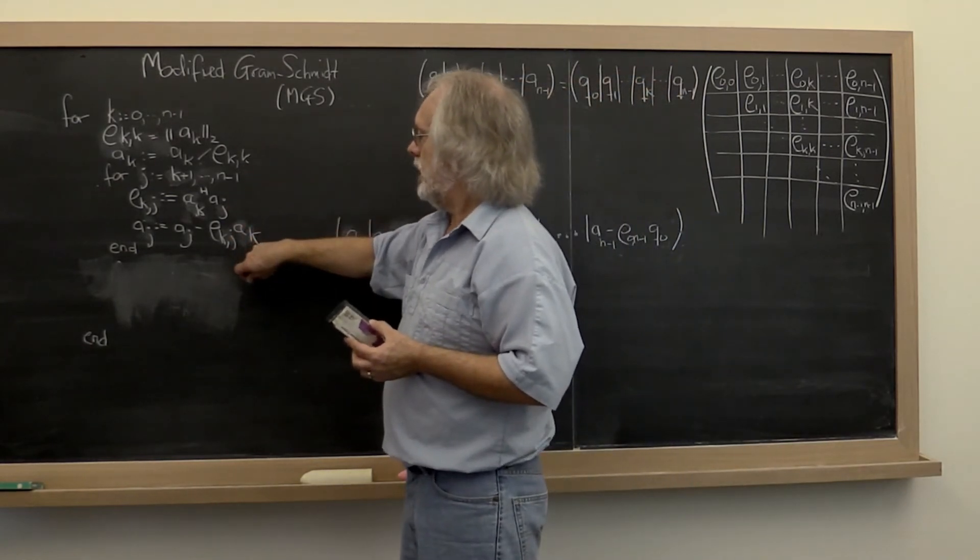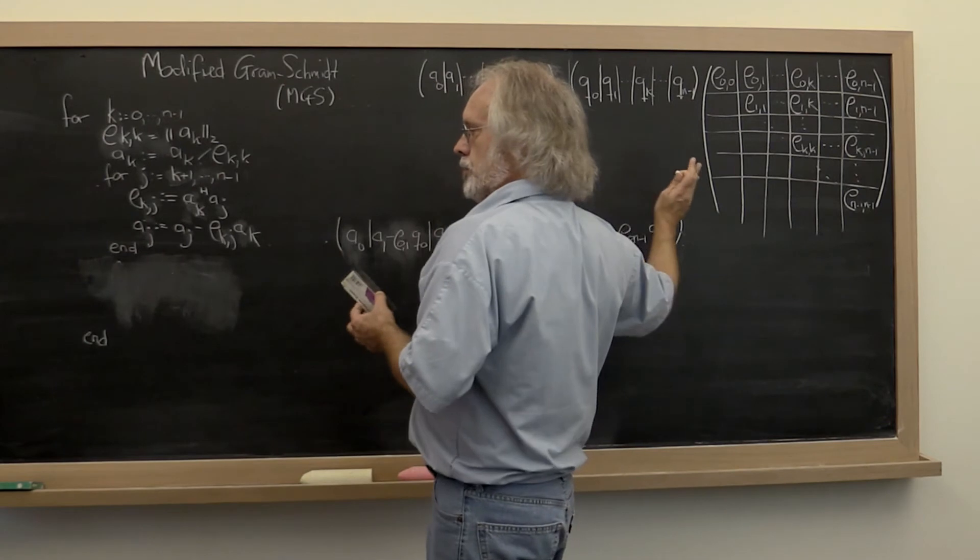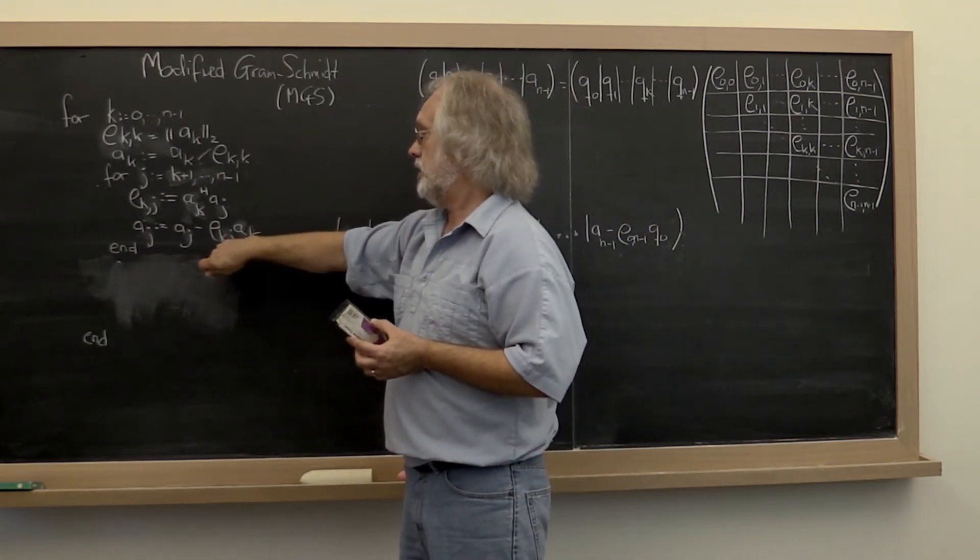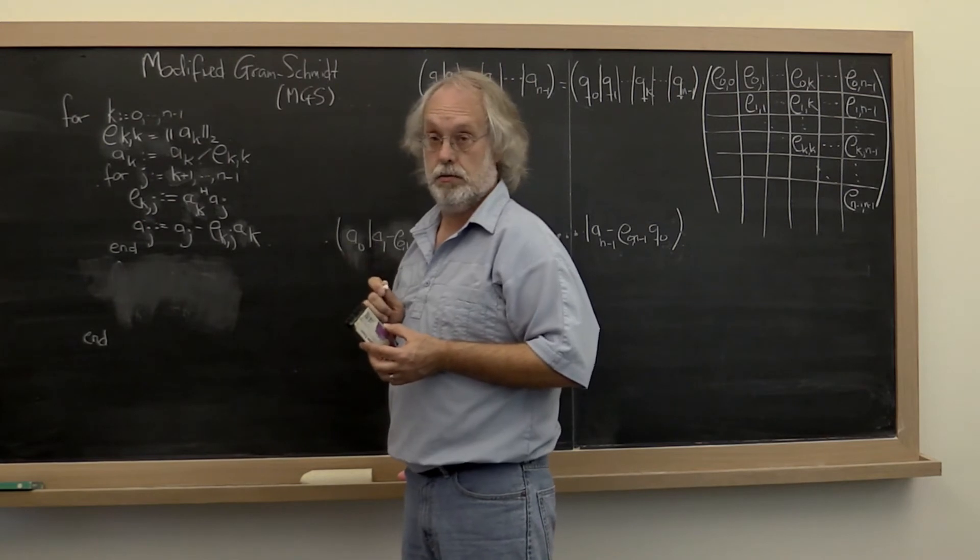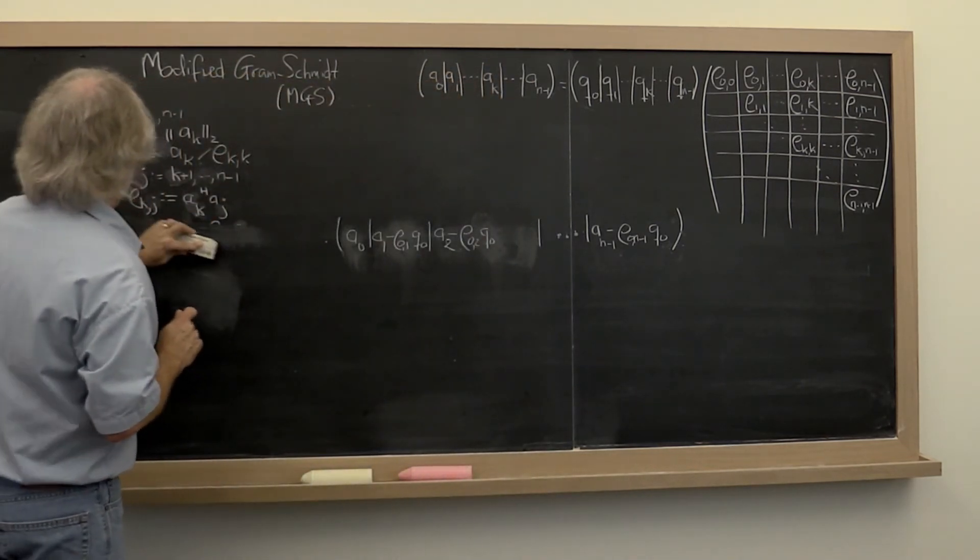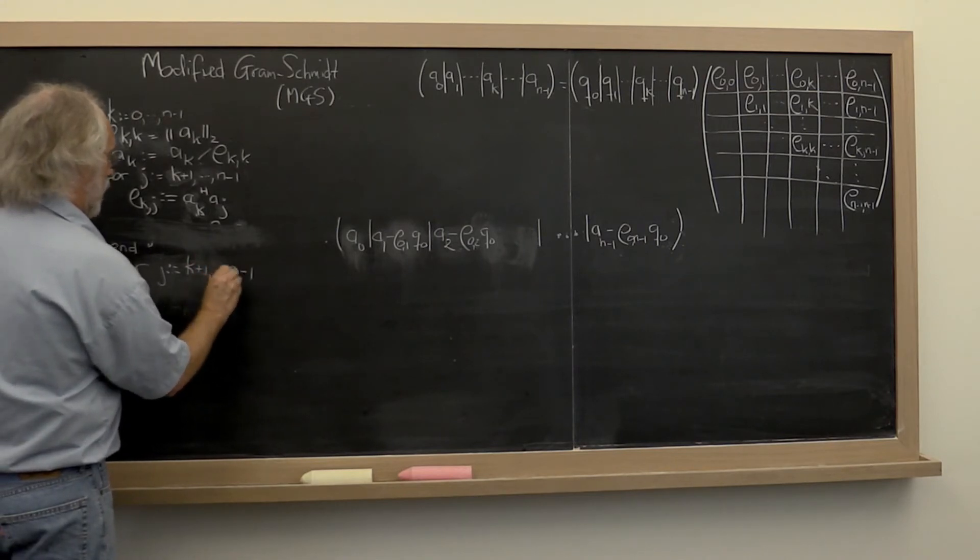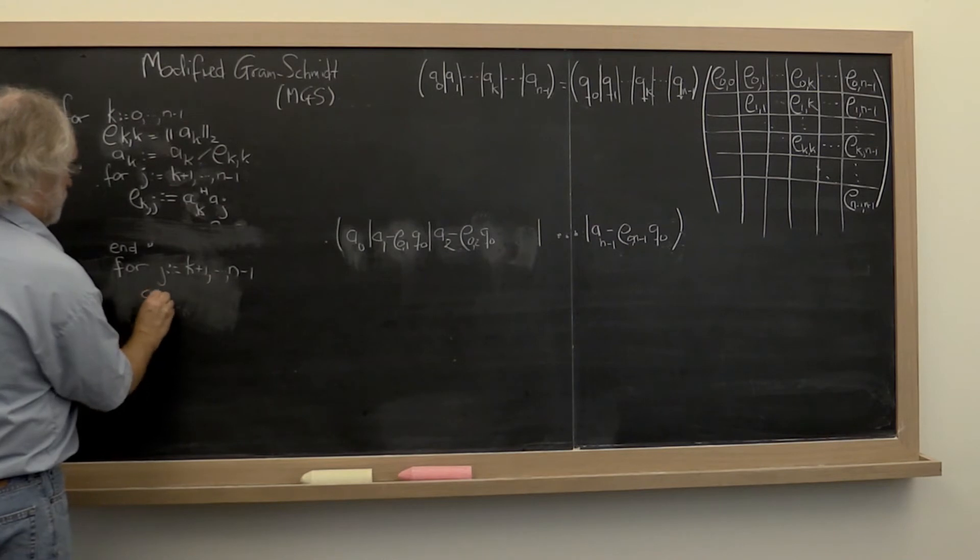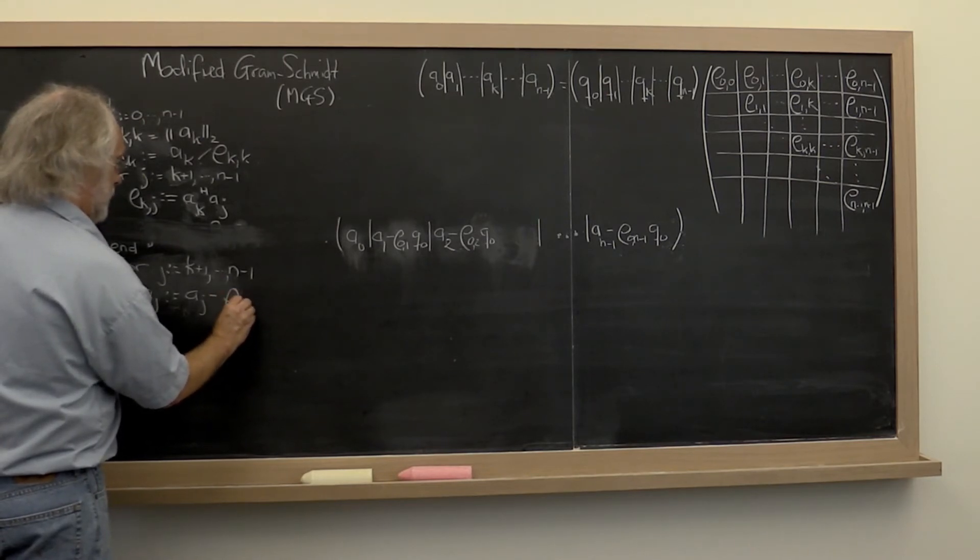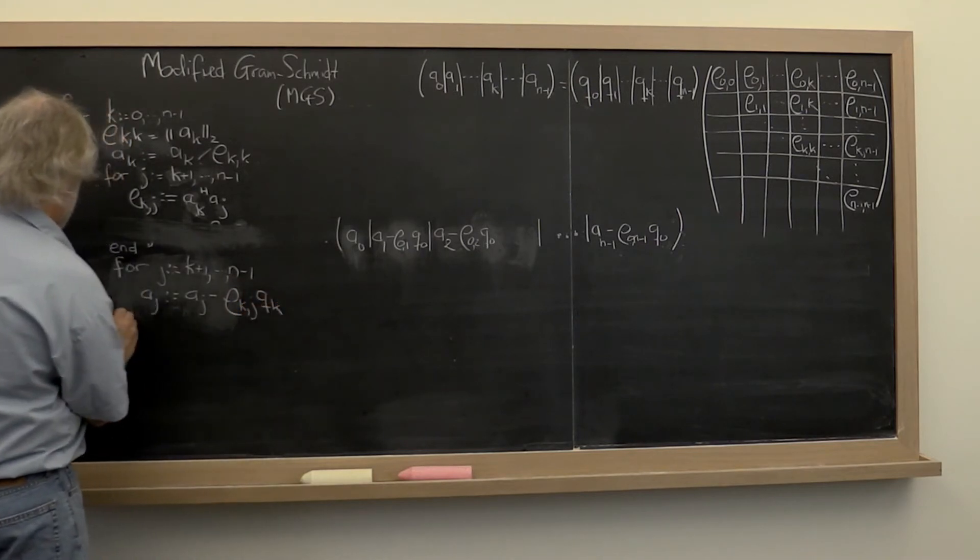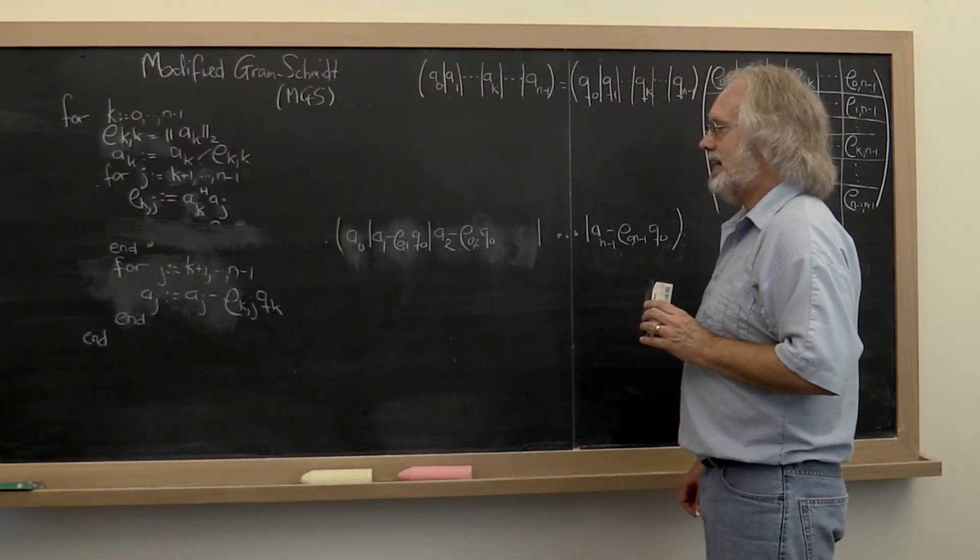Notice that we can take this loop and we can first have a loop that computes all of the coefficients and then have a loop that loops over all future columns and subtract out the component in the direction of the current Q that was just computed right here. We take A sub J and we update it by subtracting out the components in the direction of Q. Now why is that beneficial?